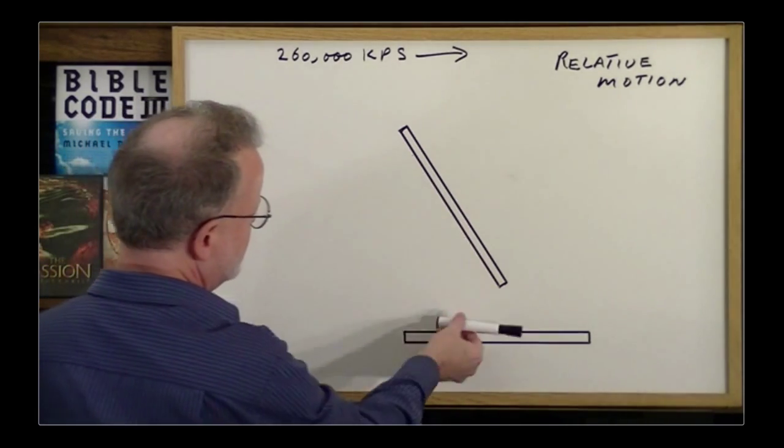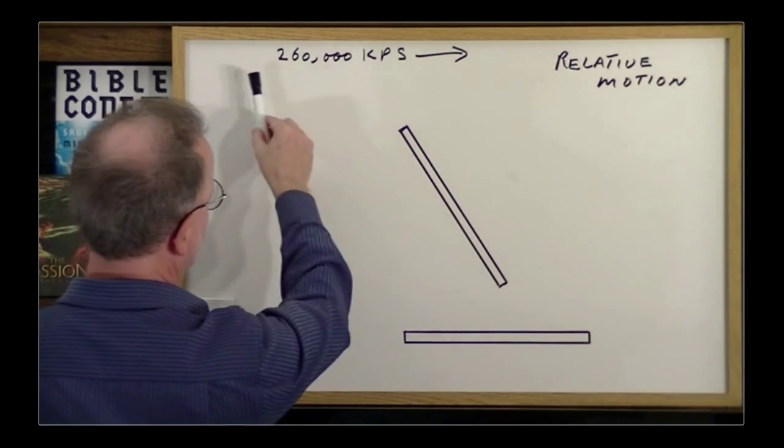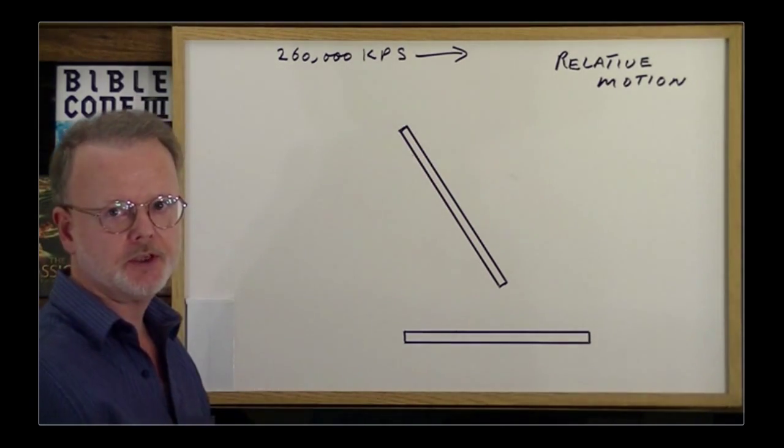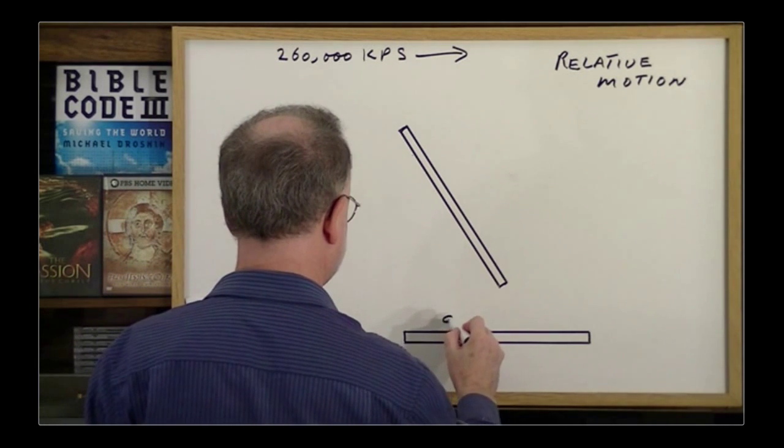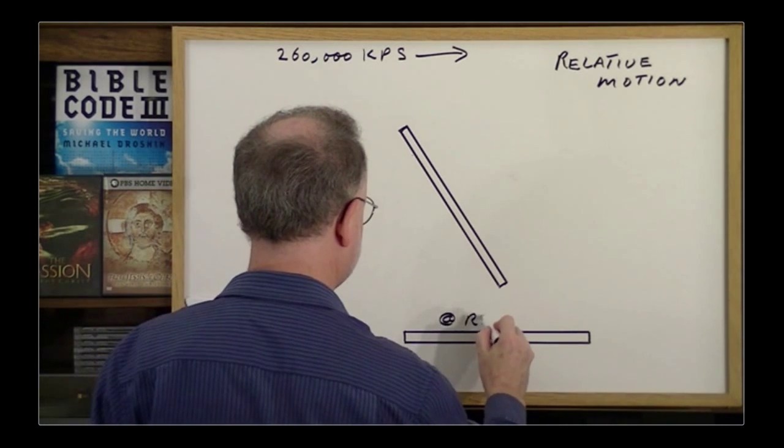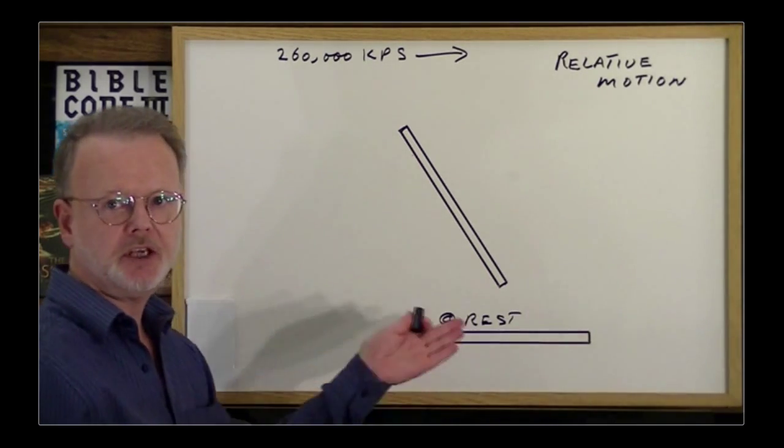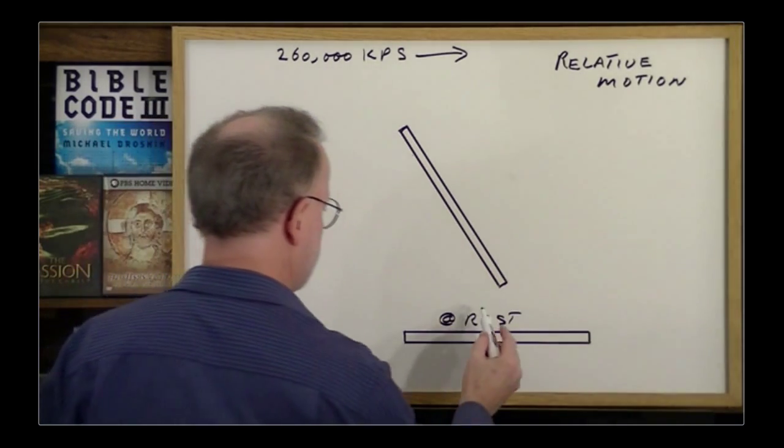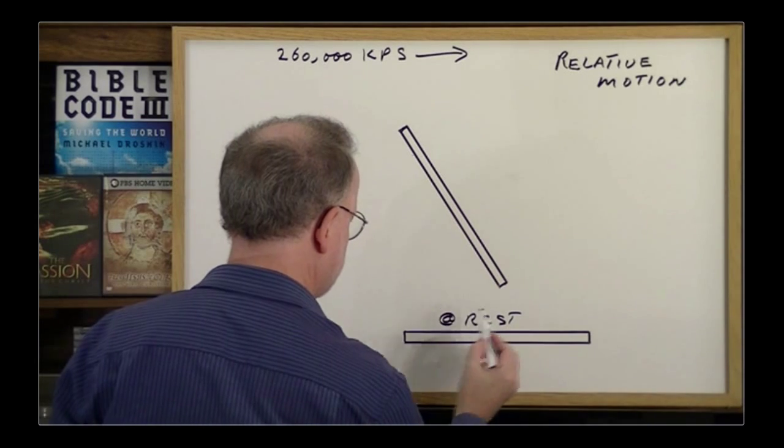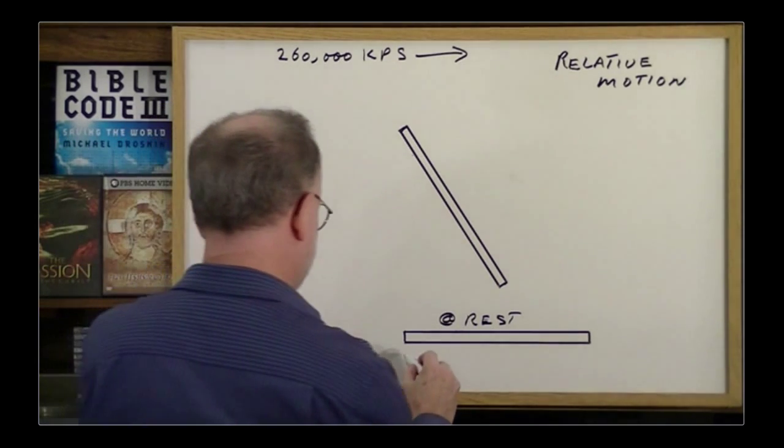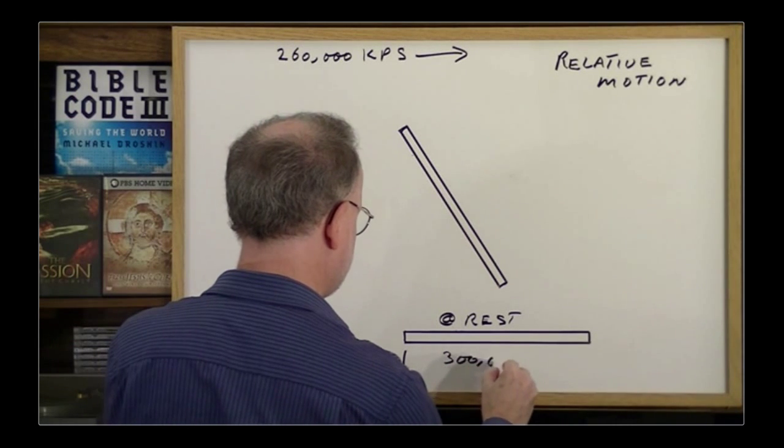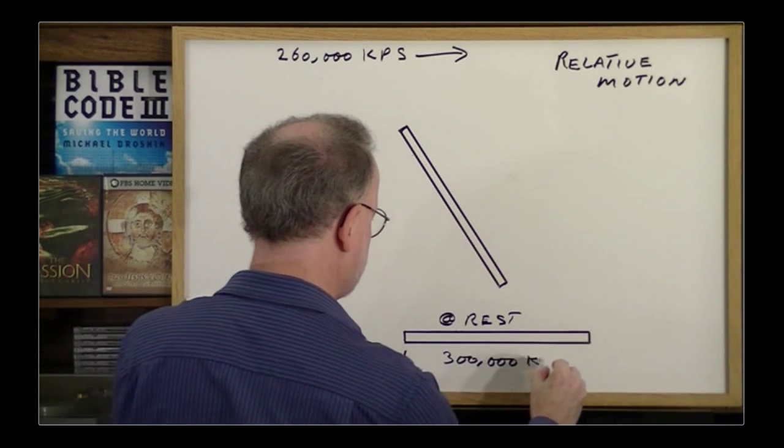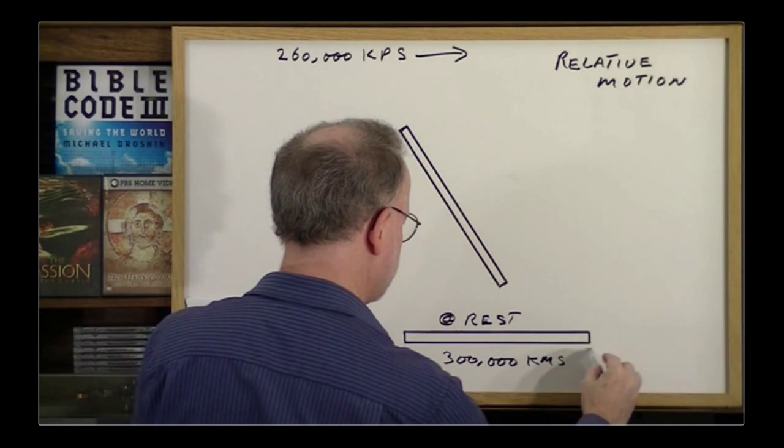Okay, so we have our two twin spaceships. This one is moving across at our usual 260,000 kilometers per second. This one here is basically at rest. It doesn't have to be, but it makes it easier to understand. Therefore, it extends across 300,000 kilometers.